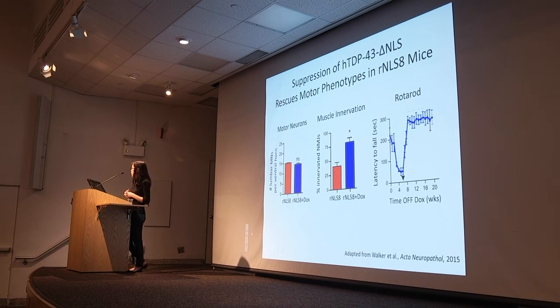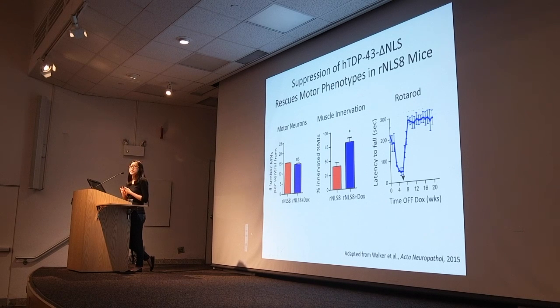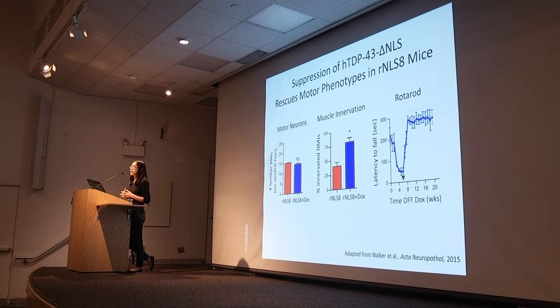Suppression of the transgene also improved the mice's performance in various behavioral tests, one of which includes the rotarod test, and it's very clear that their endurance time increased when put back on dox at six weeks.